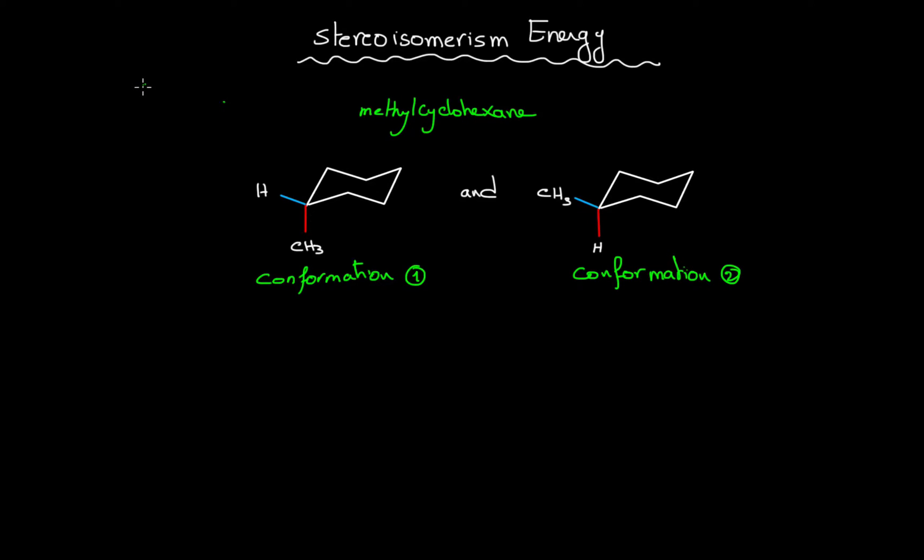Hi, this is Dr. Hayek, and in today's video we will be talking about stereoisomerism energy. If you consider the example methylcyclohexane, we can draw two chair conformations where we can place the methyl group on an axial position in one conformation and on an equatorial position in the other chair conformation.